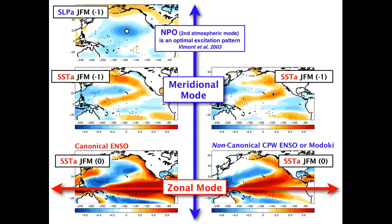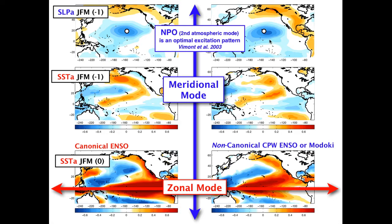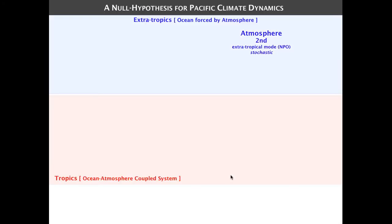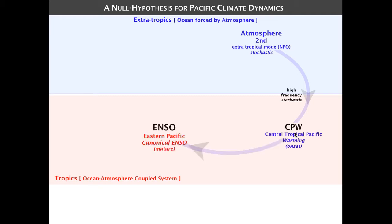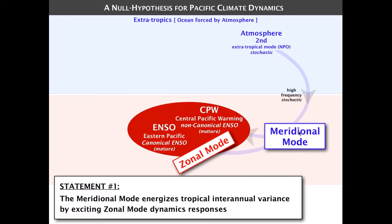This is essentially the lead pattern to Central Pacific warming — the SST anomaly and its atmospheric correspondent, the NPO. This shows that the NPO pattern in the atmosphere has the ability to excite both canonical and non-canonical types of ENSO. Once the SST anomalies excited by the NPO reach the tropics, they can ignite the zonal mode dynamics. So there is a clear connection between meridional mode dynamics and zonal mode dynamics. We can state: the meridional mode dynamics energize tropical interannual variance by exciting zonal mode dynamic responses in the tropics.